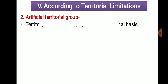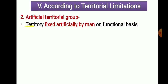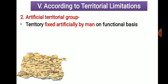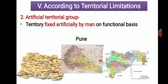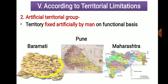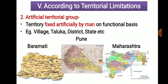The second type is artificial territorial groups — territory fixed by human beings. We form the boundaries of these particular groups ourselves. Examples include districts, talukas, states, and countries. The boundaries of countries are formed by human beings. So village, taluka, district, state, and country are all examples of artificial territorial groups.